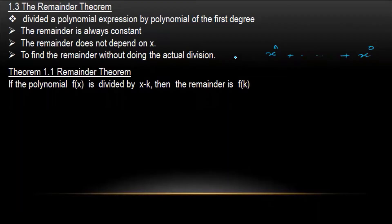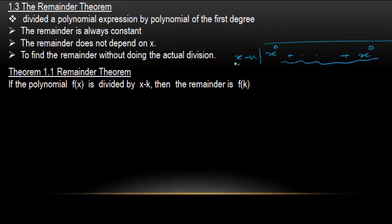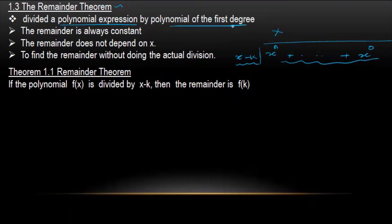A degree 3 polynomial is to be solved. A degree 1 polynomial is to be solved, and for each time, a degree 1 polynomial is to be solved in the same way. The polynomial expression is a polynomial of first degree. First degree is degree one.